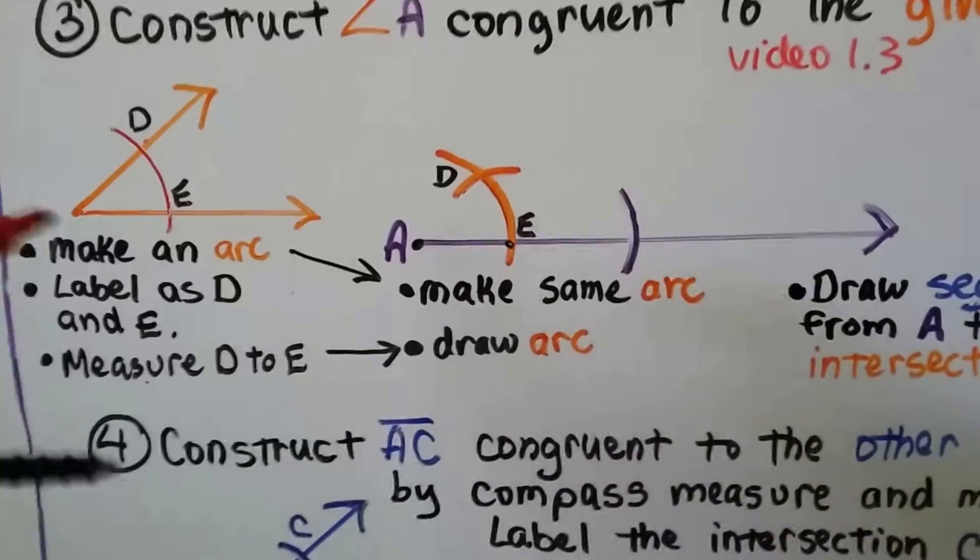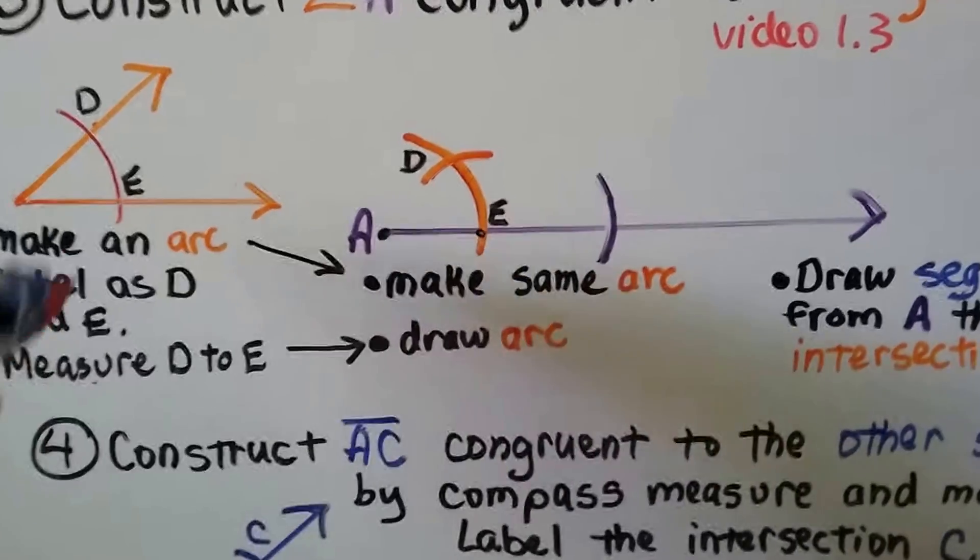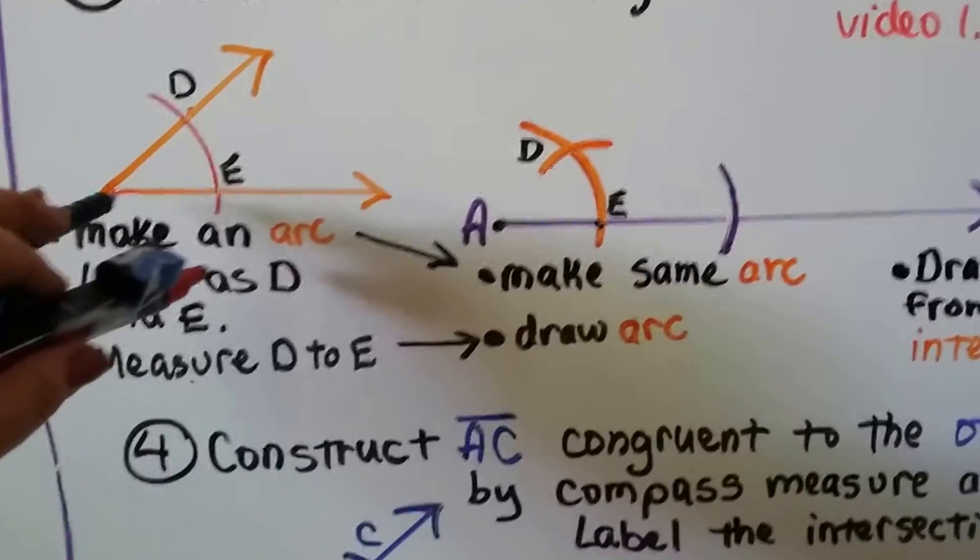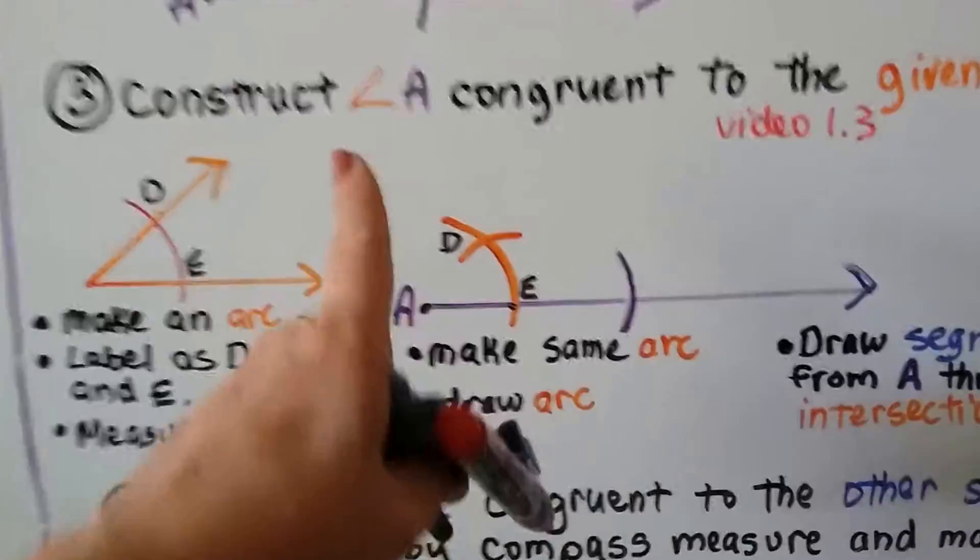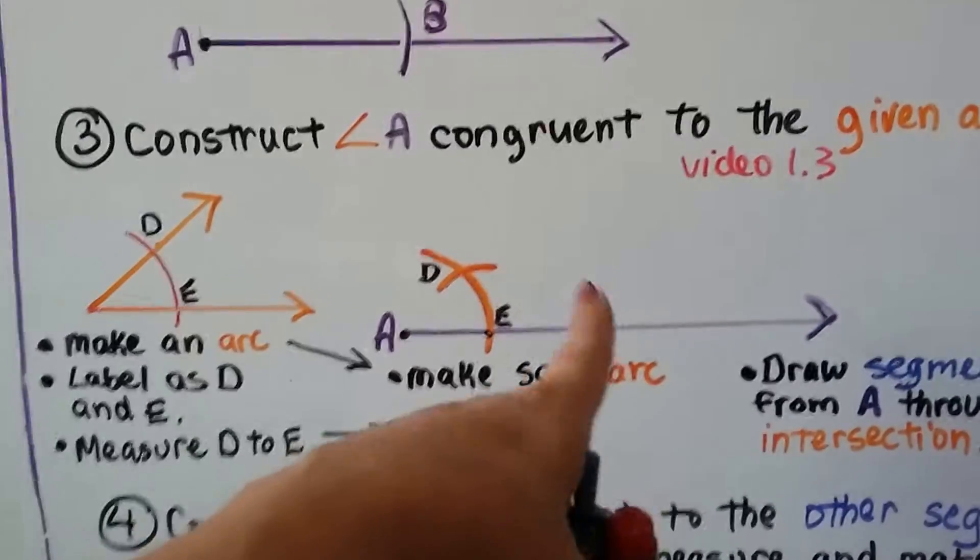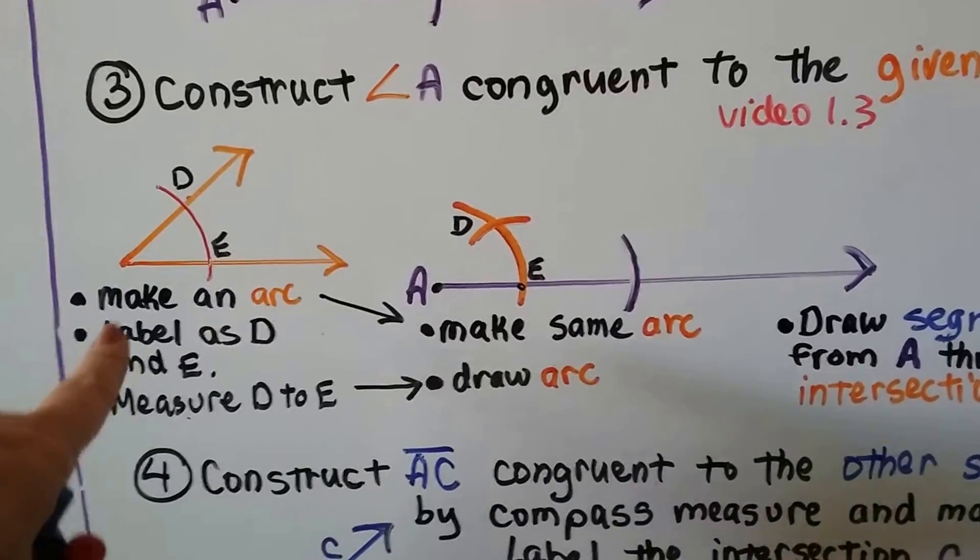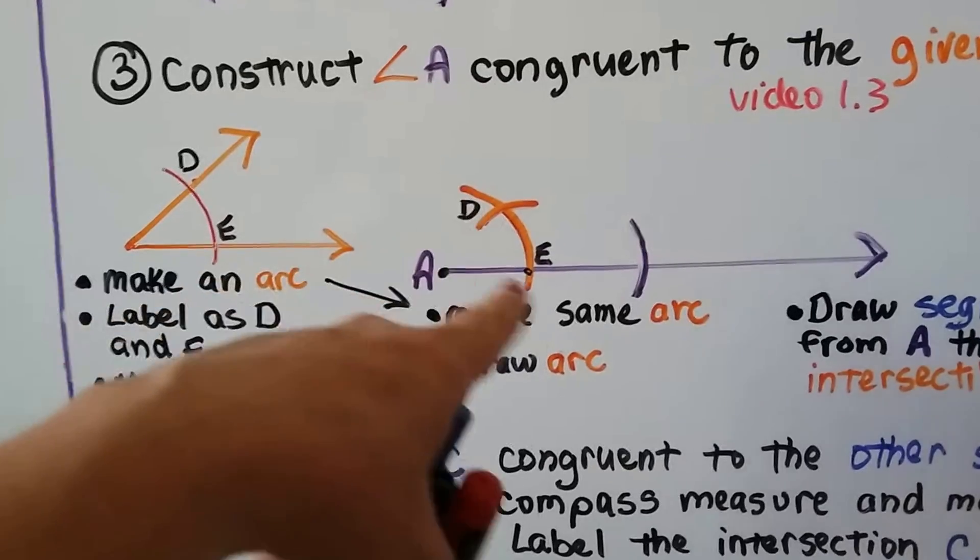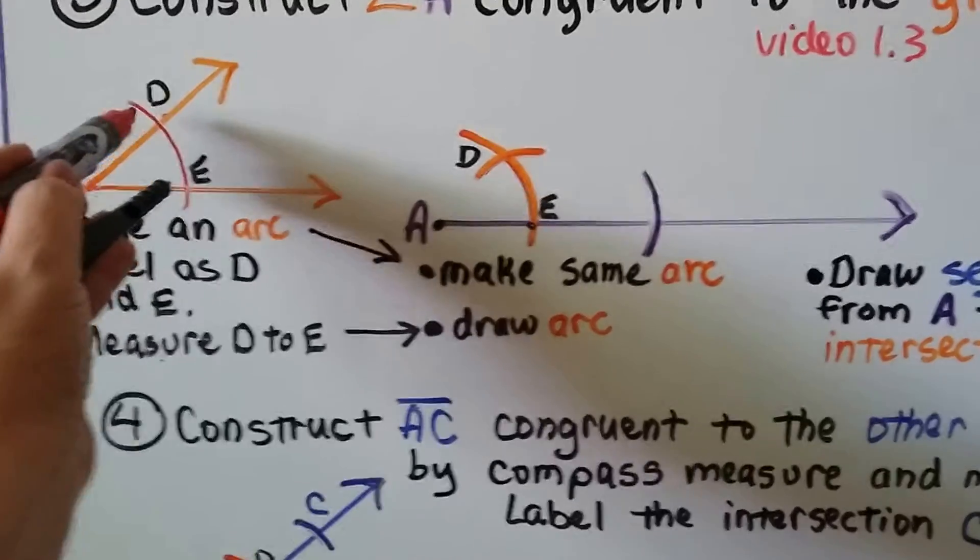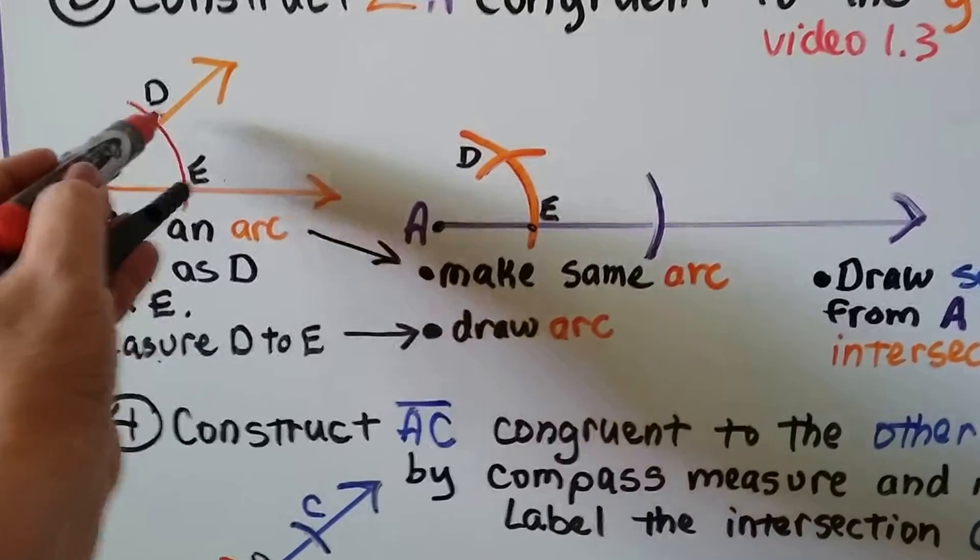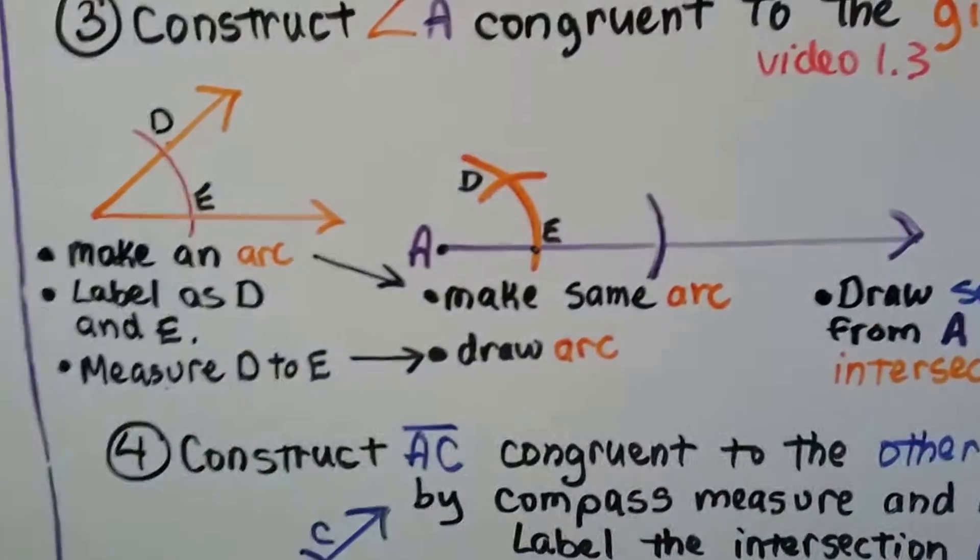The first thing we do is make an arc on the original angle. I put this at the point and made an arc. Then I went to the line that we just made with our B and made the same arc. Then I labeled this as D and this is E. What I did was I measured from D to E with my compass and I put this on E and made an arc. That ended up being D where that intersection is.